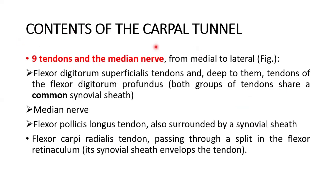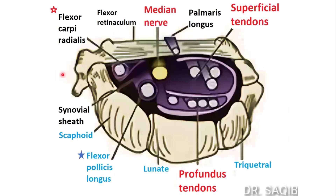Nine tendons and the median nerve pass through the carpal tunnel from medial to lateral. These include the four superficial tendons of flexor digitorum superficialis, the four tendons of flexor digitorum profundus, and the flexor pollicis longus tendon — nine tendons in total passing deep to the flexor retinaculum.